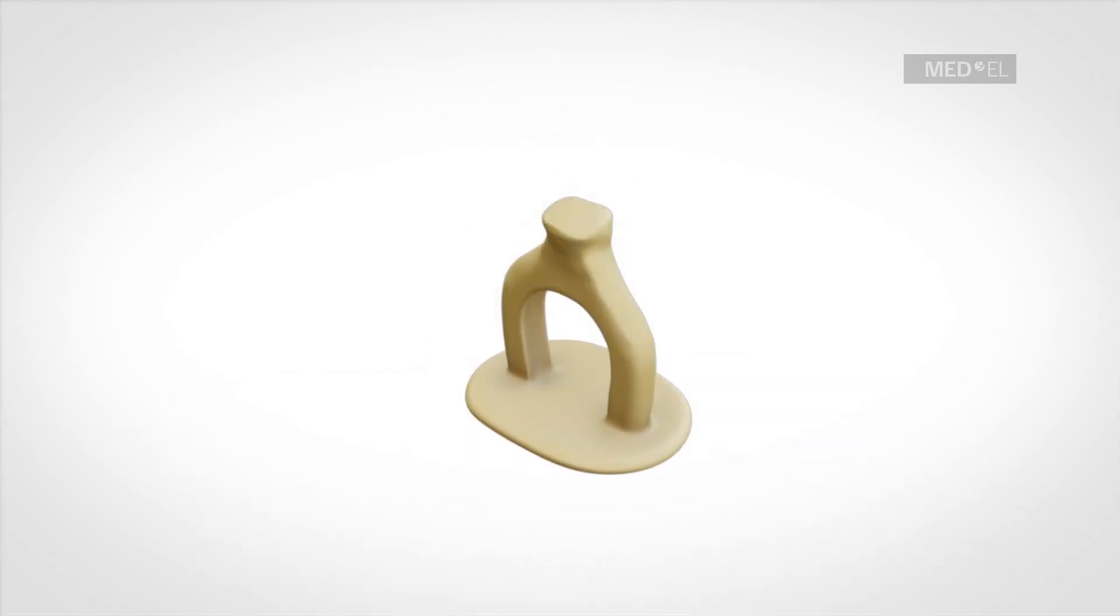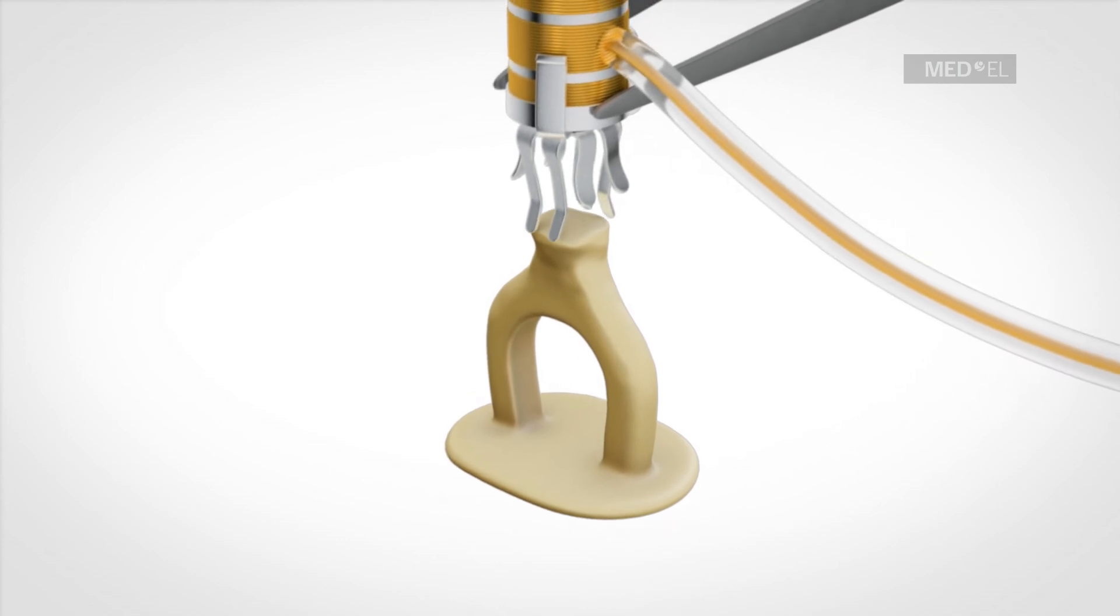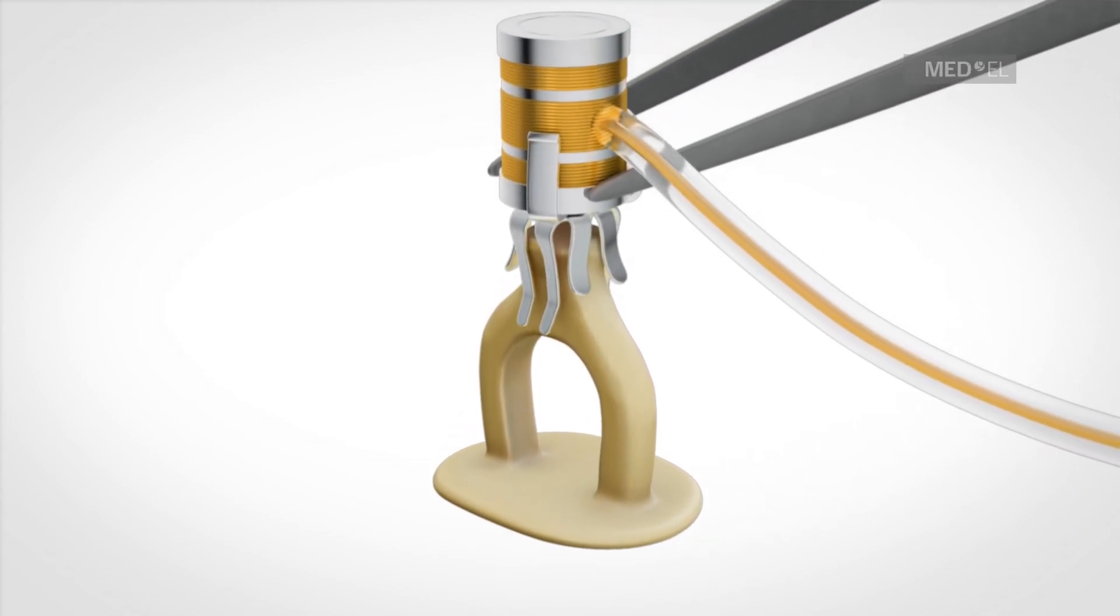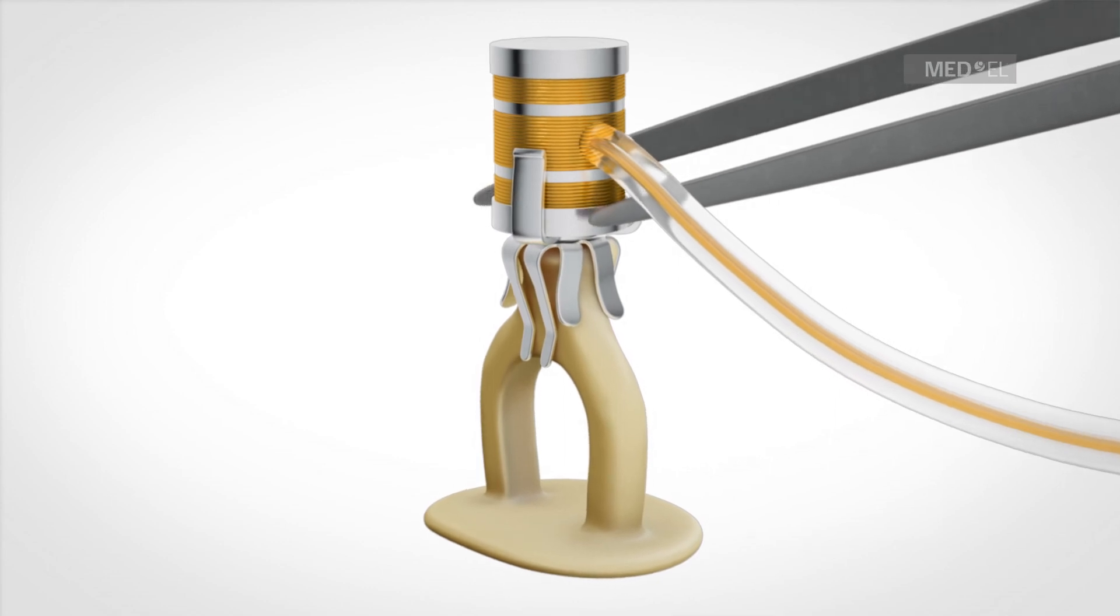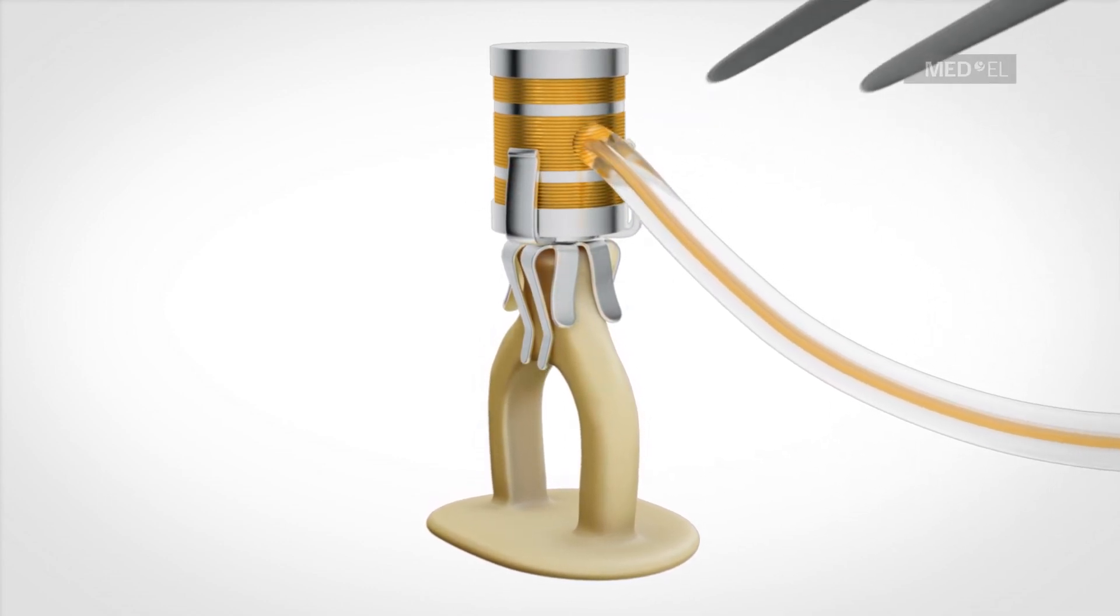The Vibroplasty clip coupler is for placement on the head of the stapes. The orientation of the legs must be observed. The shorter legs are placed over the crura and the longer legs parallel to the stapes.